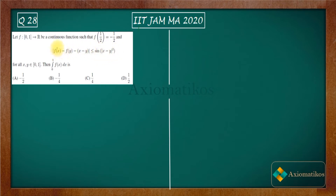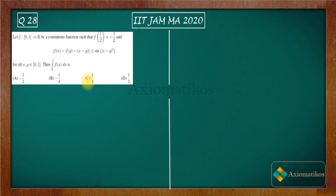This equation will produce a unique function f, using the initial point given. When you see these initial conditions, it resembles conditions in differential equations. That means this equation can lead us to the value of the derivative, because it looks similar to the definition of a derivative.